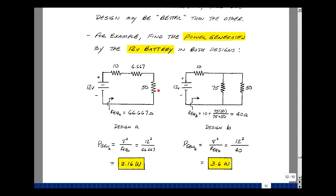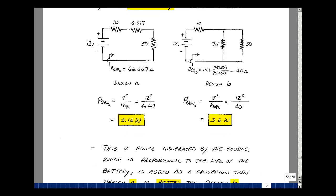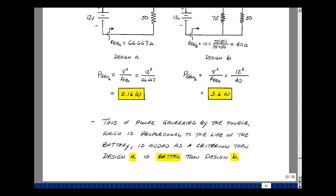So this battery generates 3.6 watts and this circuit consumes 3.6 watts. They both produce the same 9 volts out but one is taking a lot more power than the other. So if we're concerned about the life of a battery, then this first design is better than the second one.